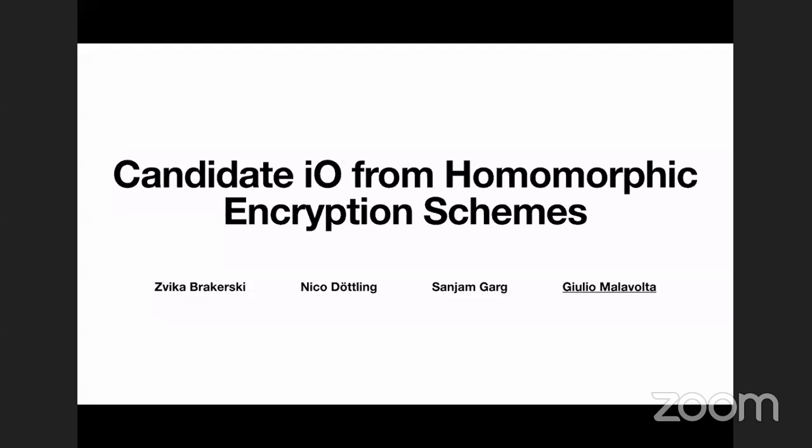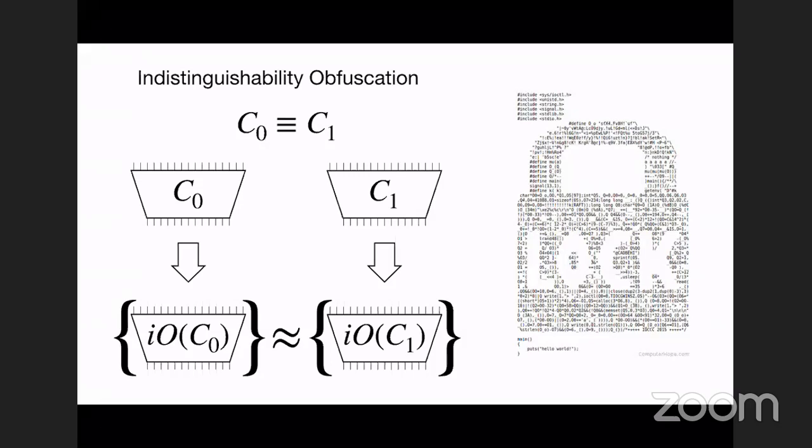The way we achieve that is by constructing a new primitive called Split Fully Homomorphic Encryption, or Split FHE for short. The first conceptual contribution is that we show that Split FHE by itself is enough in order to construct indistinguishability obfuscation.